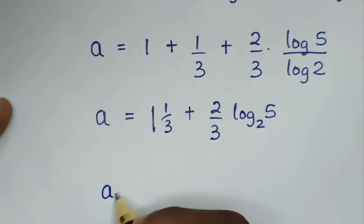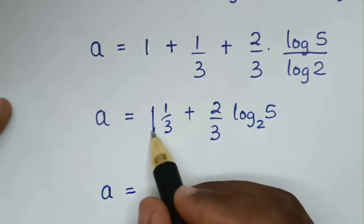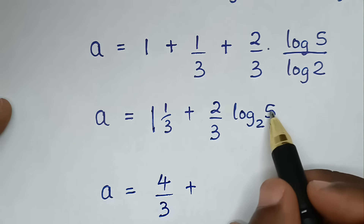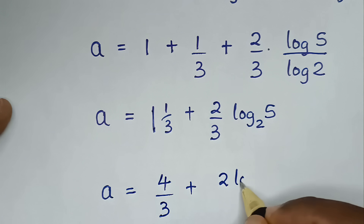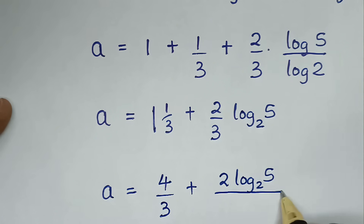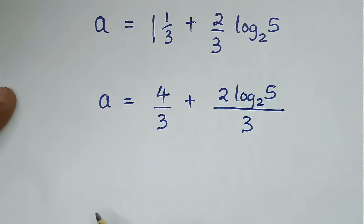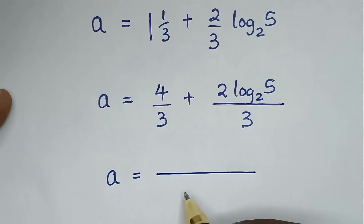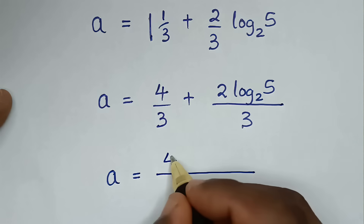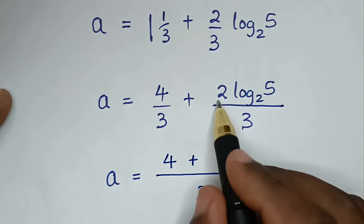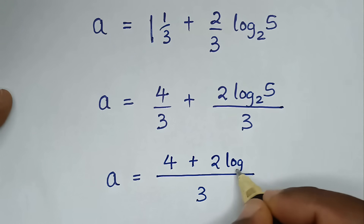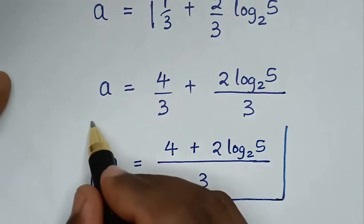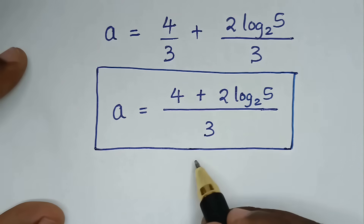Then, it will be 1 plus 1 over 3 plus 2 log base 2 of 5 over 3. Combining these over a common denominator of 3: it will be a is equal to 3 over 3 plus 1 over 3 plus 2·log base 2 of 5 over 3, which gives 4 plus 2·log base 2 of 5, all over 3.